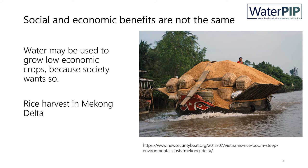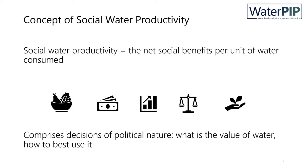What is then the concept of social water productivity? Social water productivity is defined as the net social benefits per unit of water consumed. These social benefits are the benefits that society, or actually some actors in society, value as most important. These benefits may range from food security to poverty alleviation, economic growth, equitable use of water, or environmental conservation.